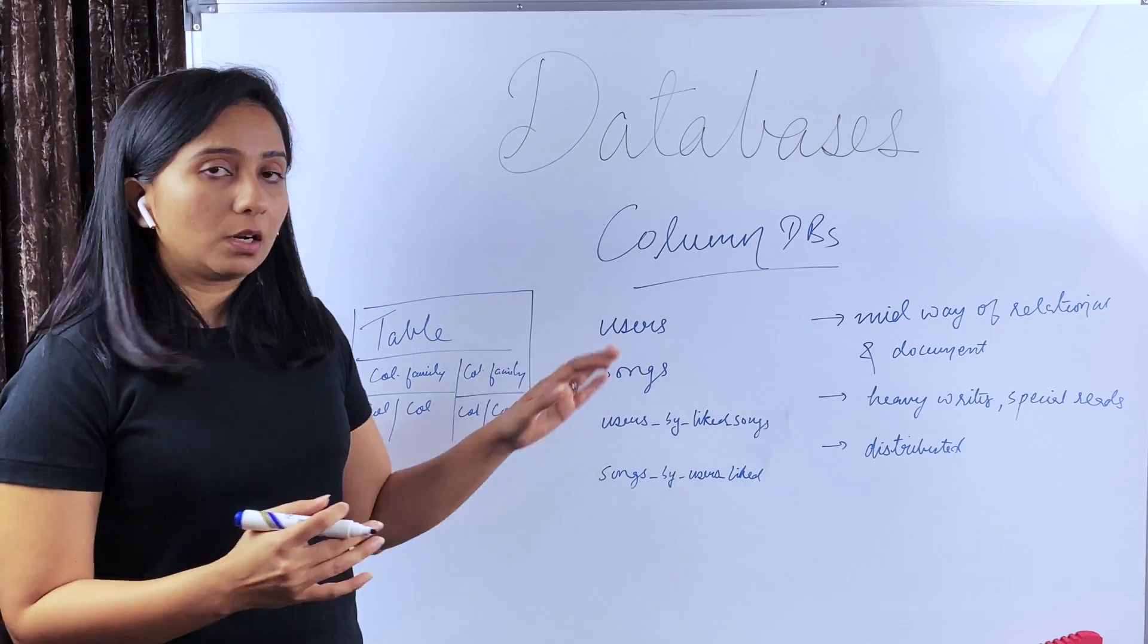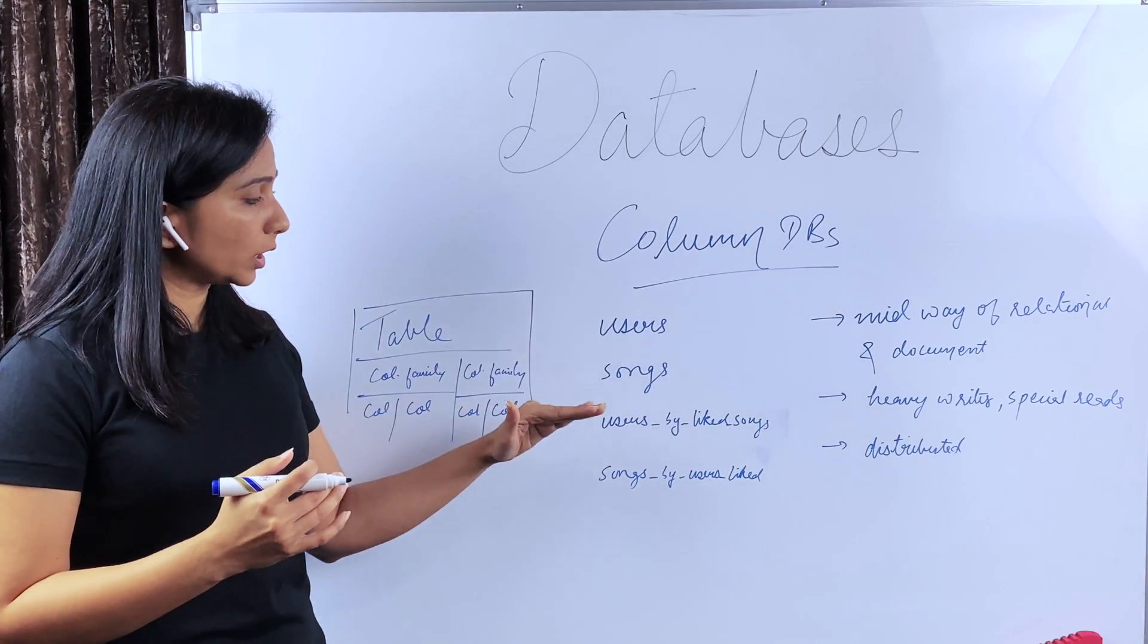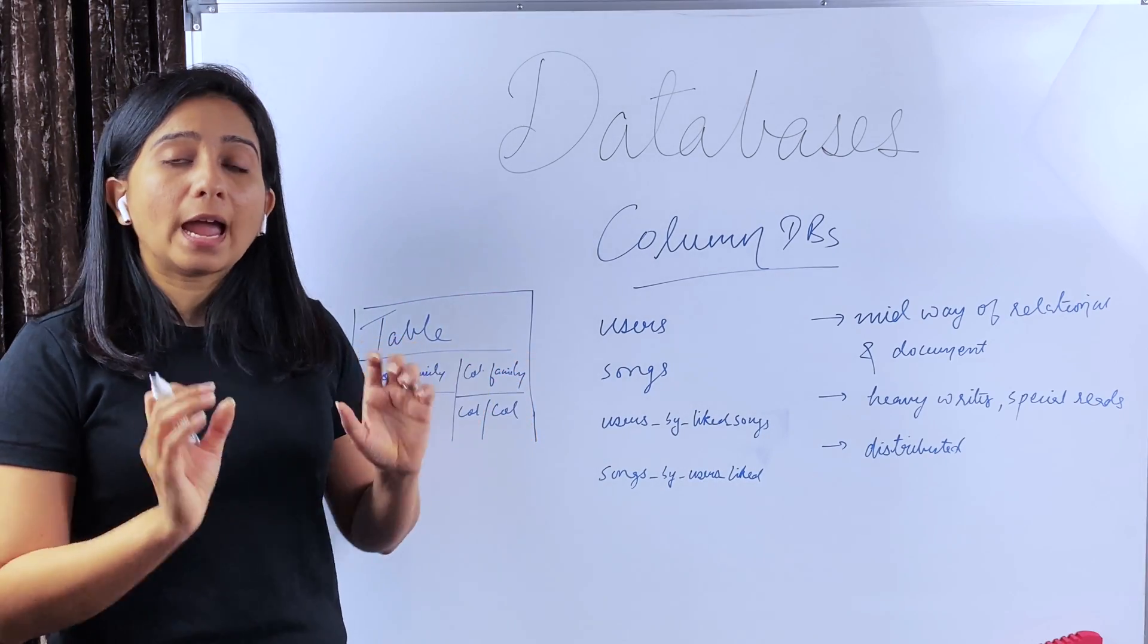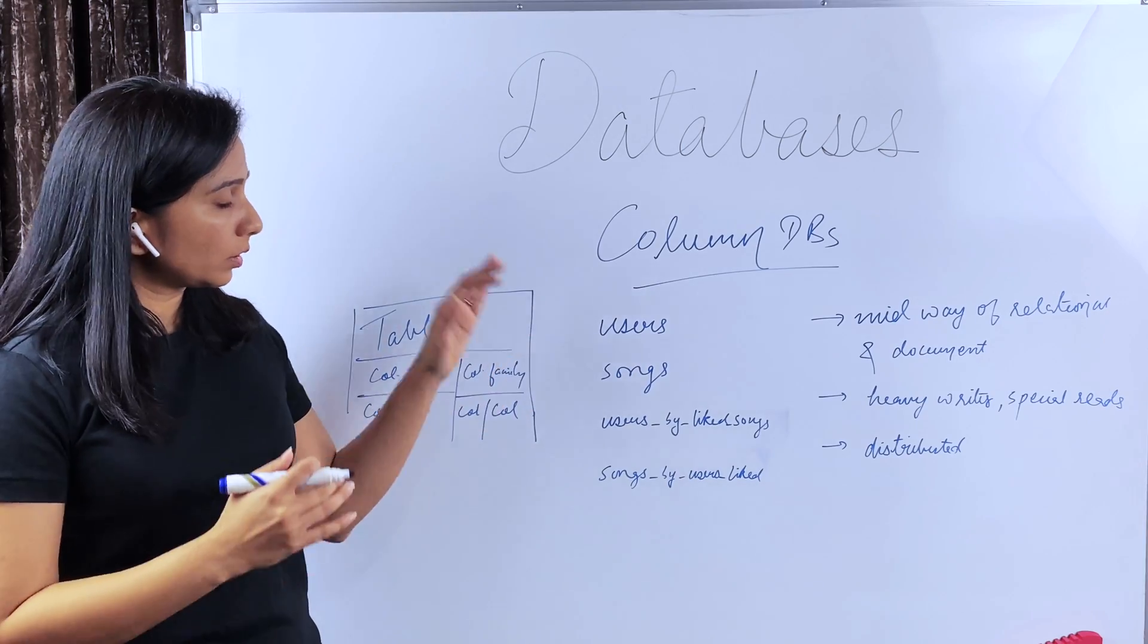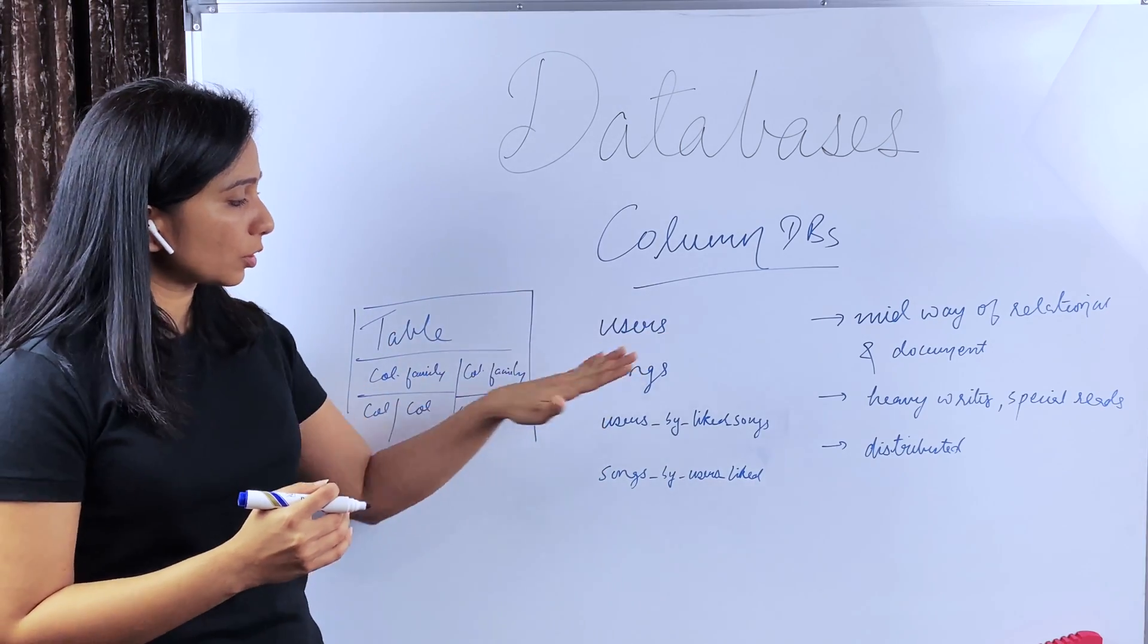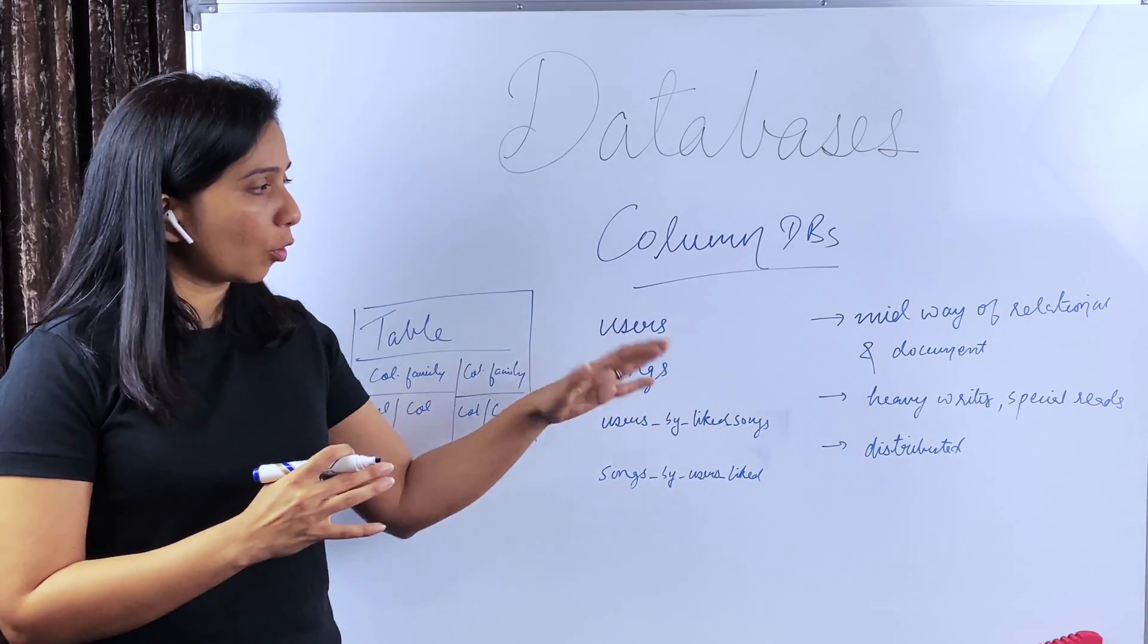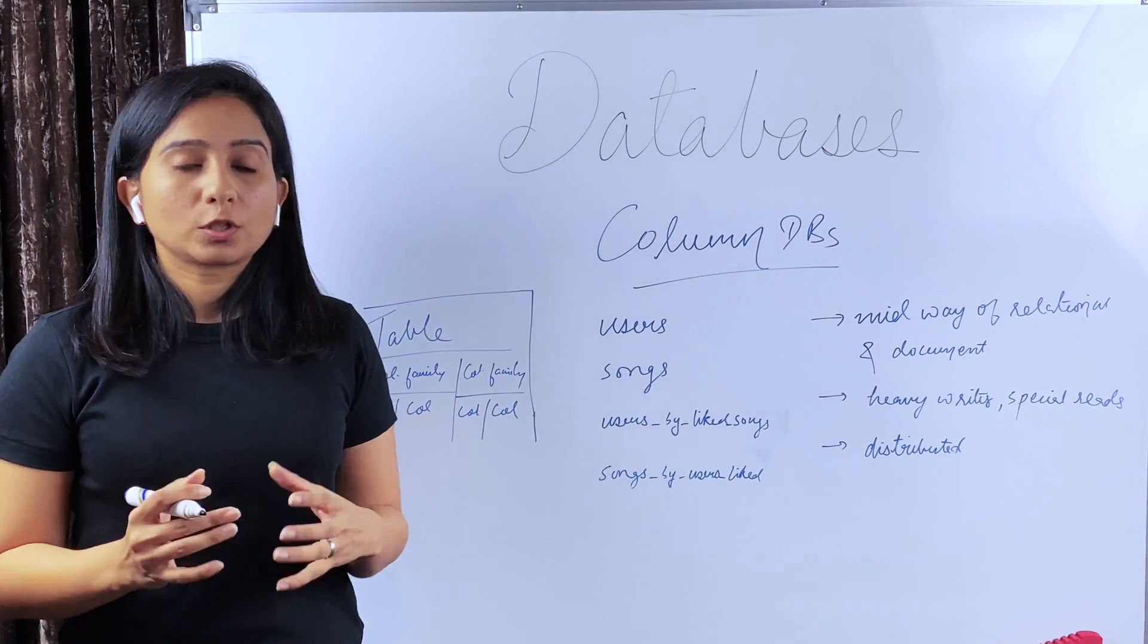And the table structure is defined by the kind of queries you have to make. For example, the music app, the queries will be, you have to fetch user detail, song detail. You have to fetch users that have liked the particular song. And also you have to fetch the songs that are liked by a particular user. So some tables in column DB could be then users, songs, users by liked songs and songs by users liked. This design in column DBs is done with respect to what kind of reads are required.